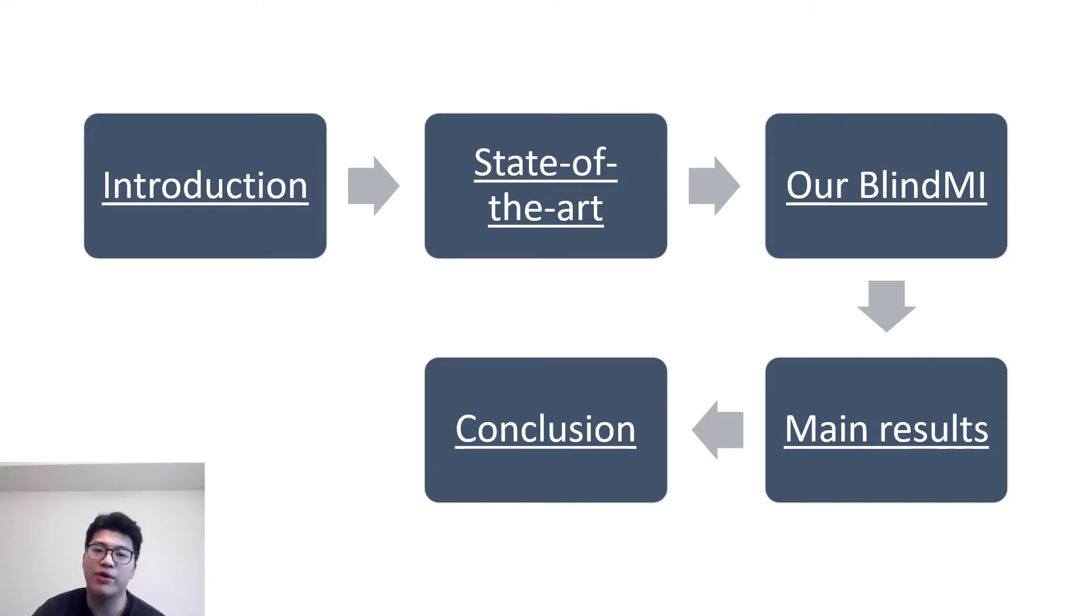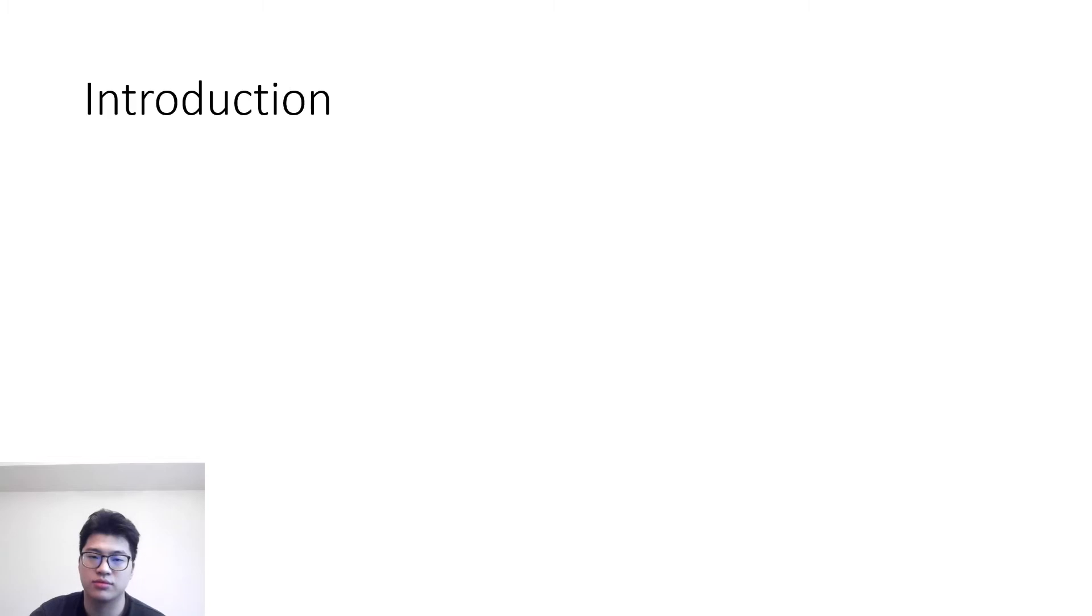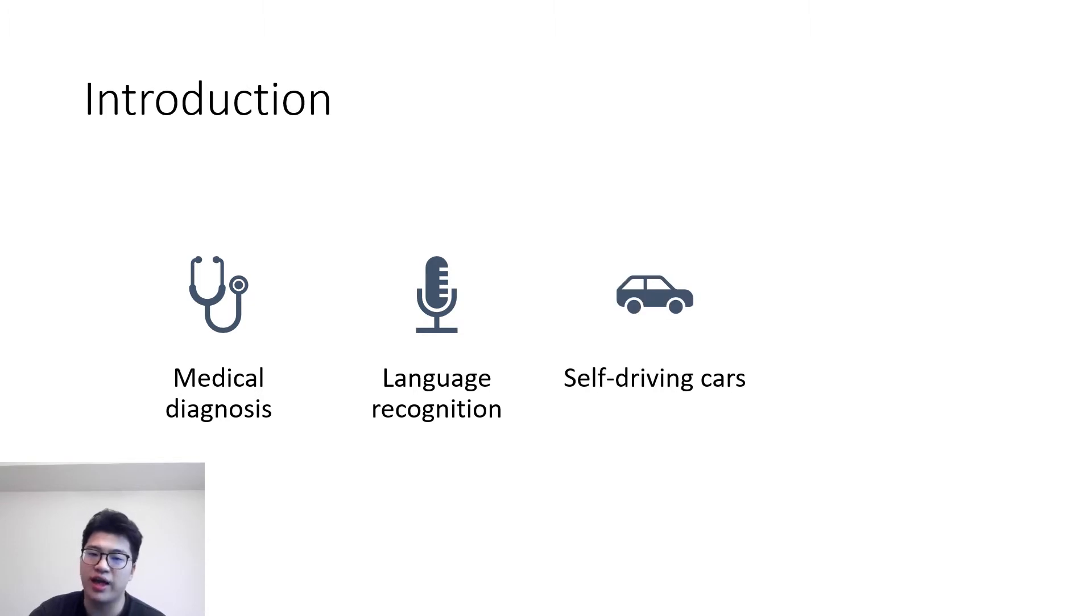First, I will show the roadmap of our presentation. Let us start from the introduction. Machine learning has achieved human-level performance in many areas such as medical diagnosis, language recognition, self-driving cars, and social media applications, but it has vulnerability to privacy-related attacks.